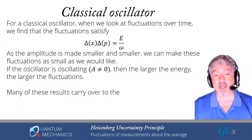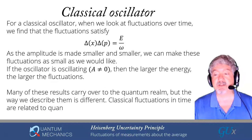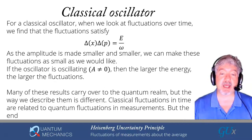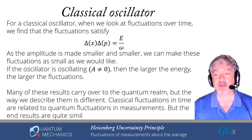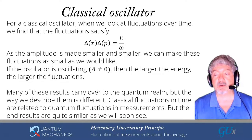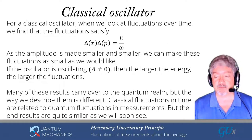Many of these results carry over to the quantum realm, but the way we describe them is different. We no longer look at averages over time as in the classical case, but we now look at quantum fluctuations with regards to measurements. The end results are very similar when we compare the fluctuations, but remember that in the quantum case we're looking at fluctuations over measurements, which is different than looking at fluctuations over time.